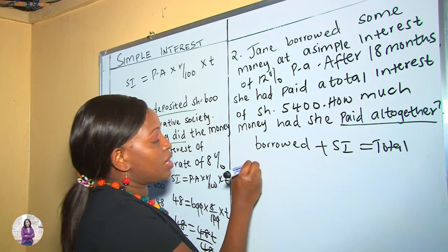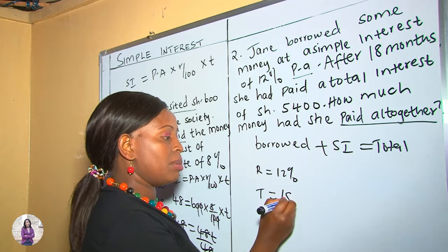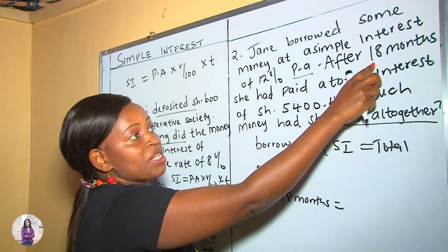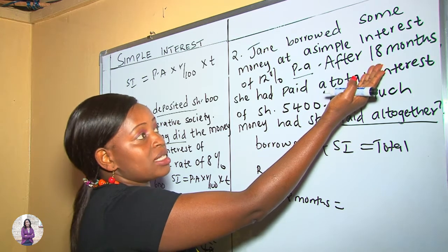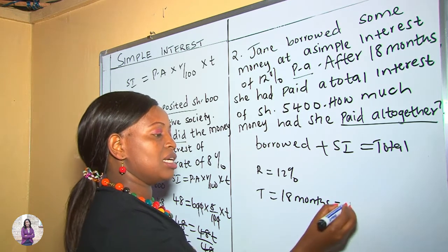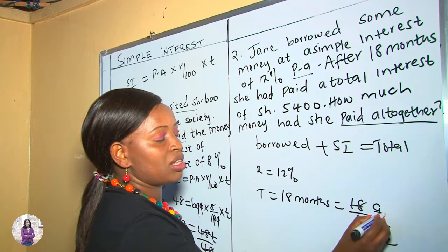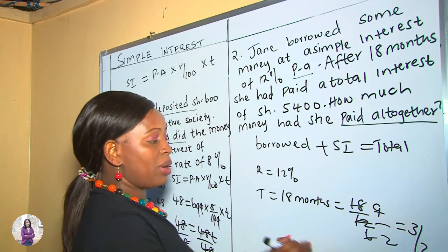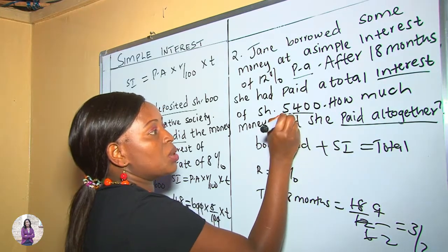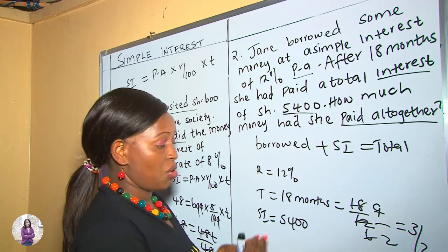We are given the rate: 12% per annum, meaning on a yearly basis. The time is 18 months, but because the rate is per annum we need to convert months to years. So 18 divided by 12 simplifies to 3 over 2. Our time is 3/2 years. We are also given the simple interest, which equals 5,400 — so we don't need to calculate the simple interest because it is already provided.